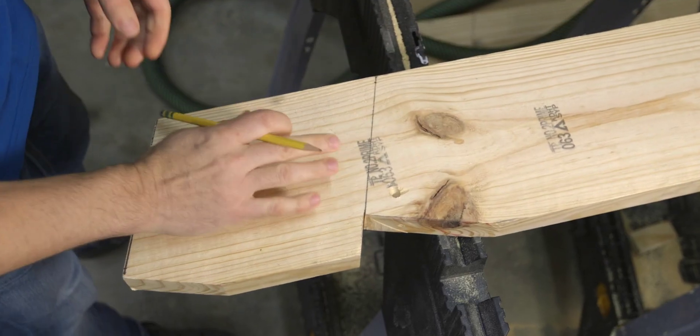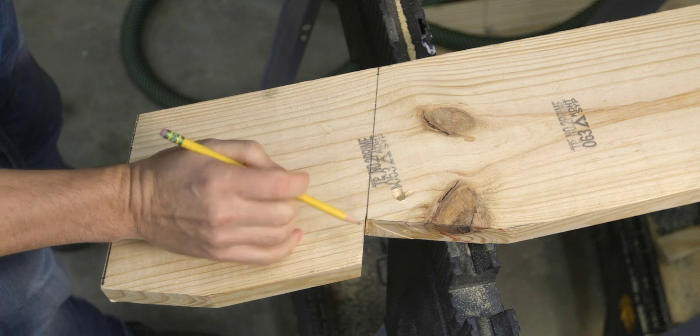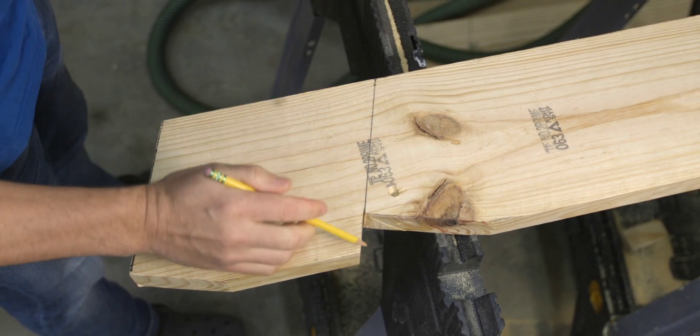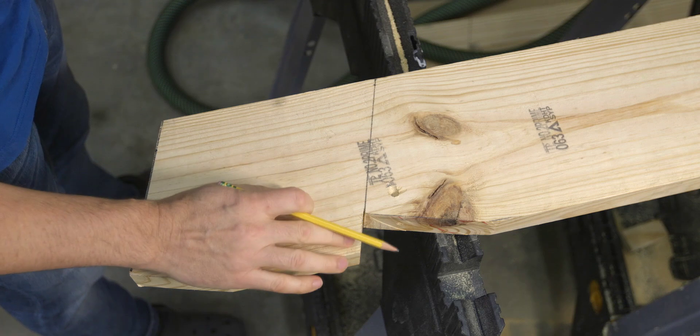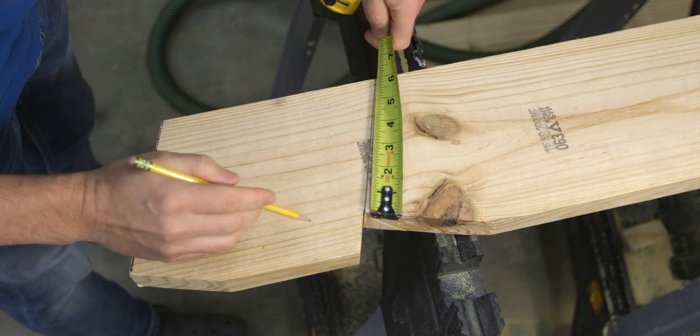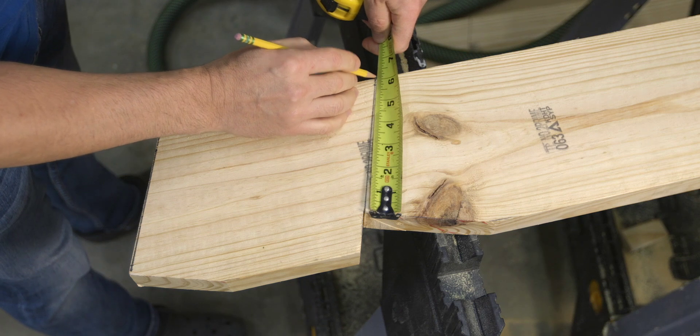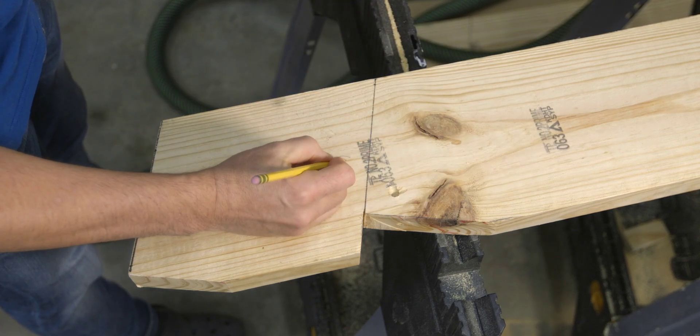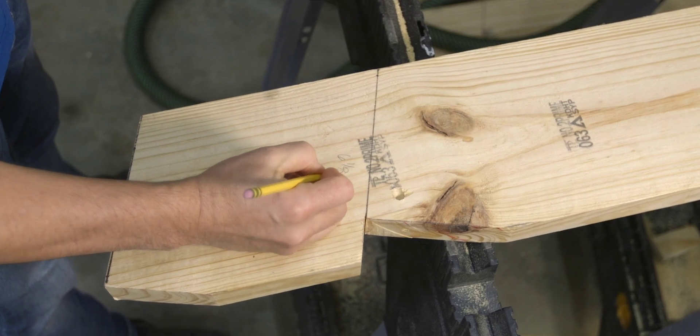If we look back at our original rafter layout, we can still see our outside building line or what's left over after we've cut out the bird's mouth. The measurement of that line from the corner of the bird's mouth to the top of the rafter is called the height above plate, which for this 2x8 rafter is 6 1/8 inch.